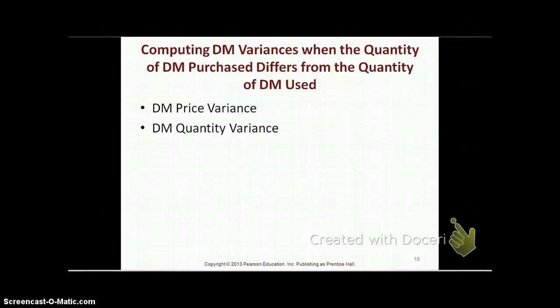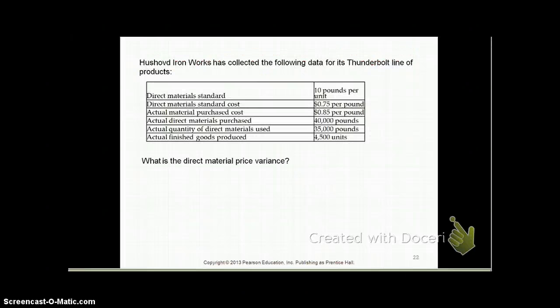Next, let's calculate the direct material variances when the quantity purchased and quantity used are different. The very first thing you need to check is whether the quantity of direct materials purchased differs from quantity used. Here, direct materials purchased was 40,000 pounds, but direct materials used was 35,000 pounds — so we cannot use the same approach as before.